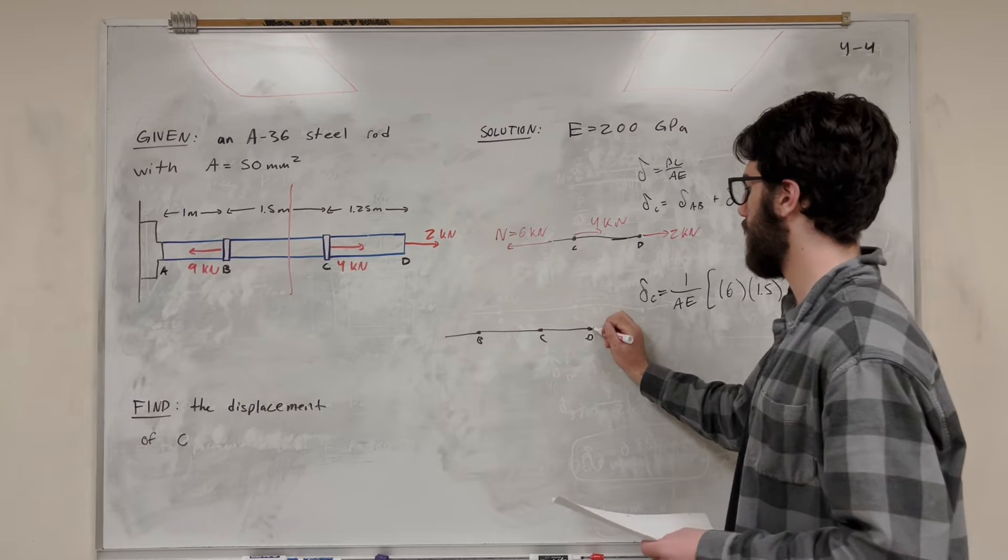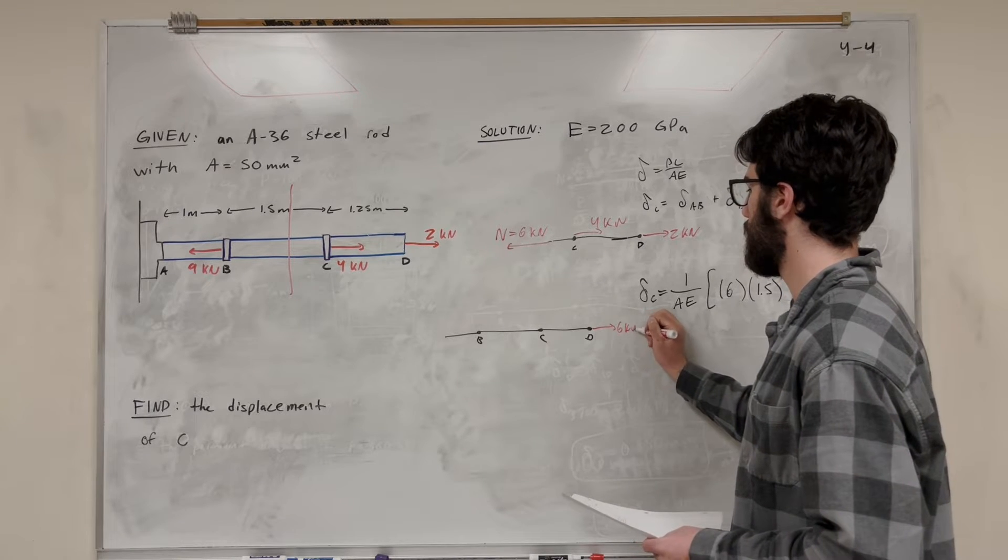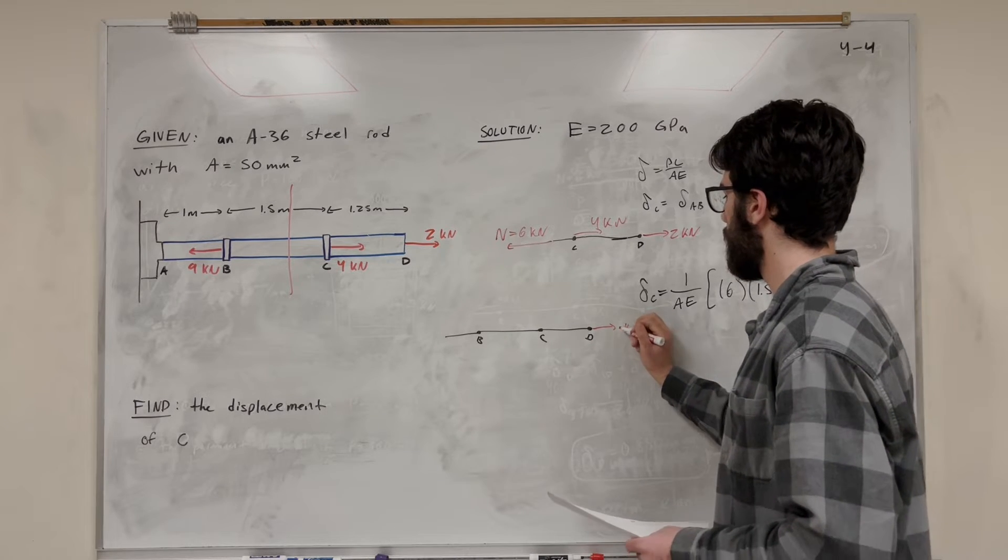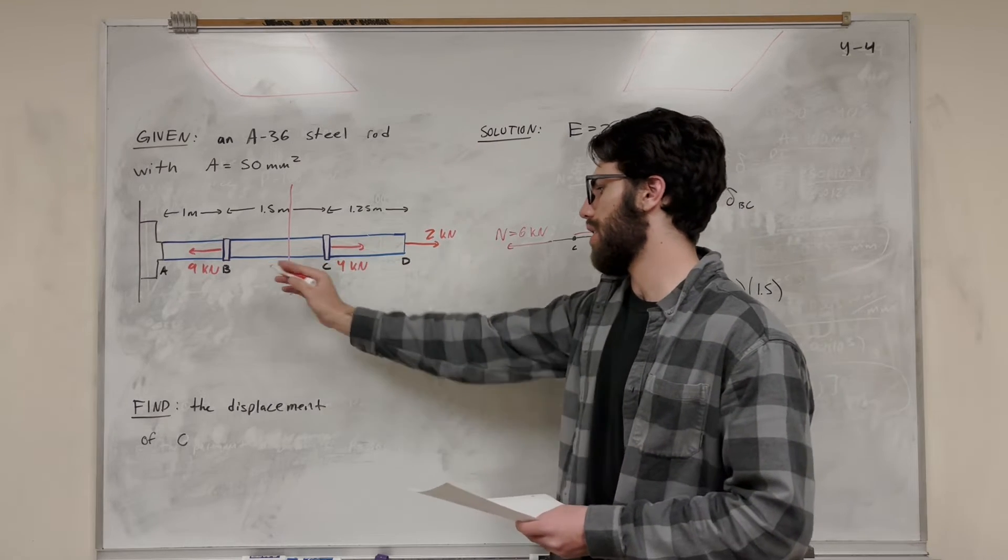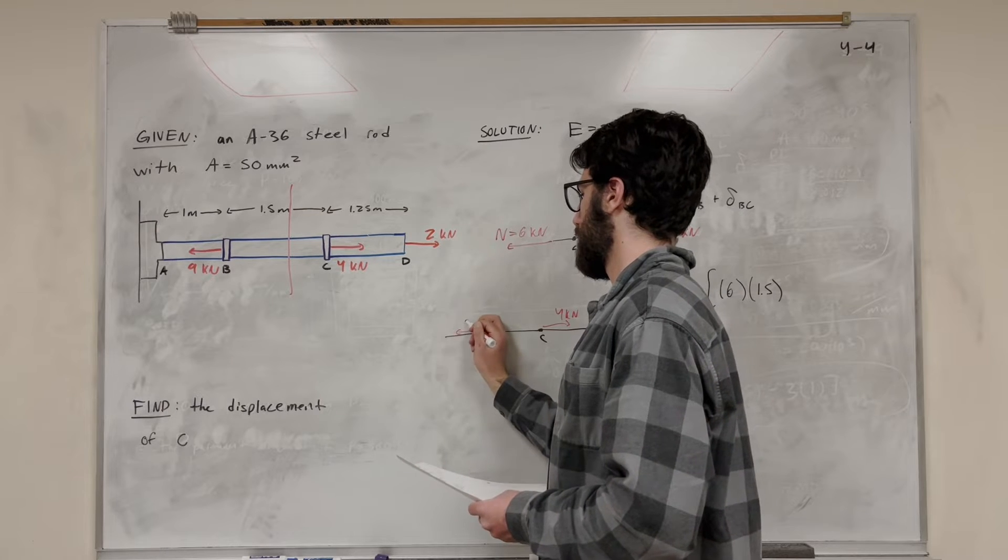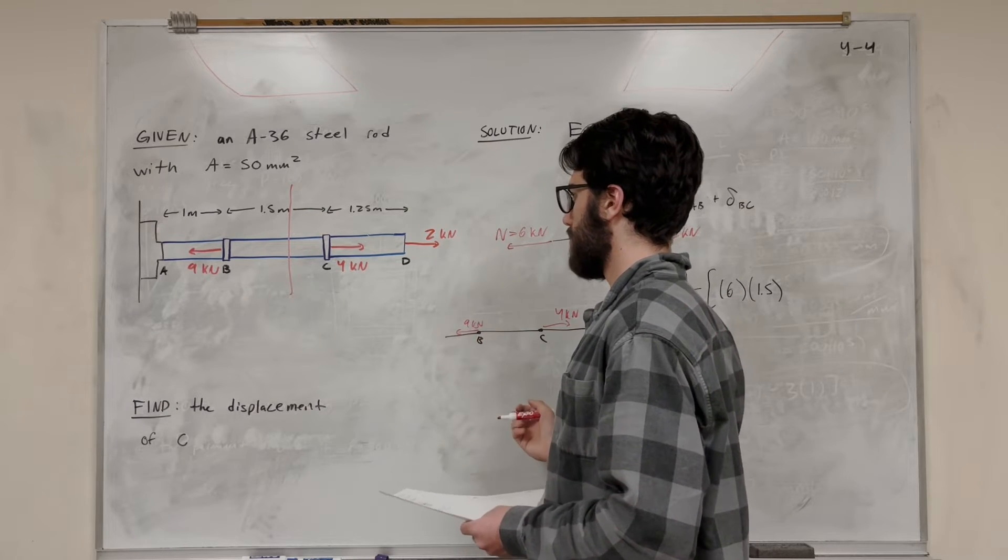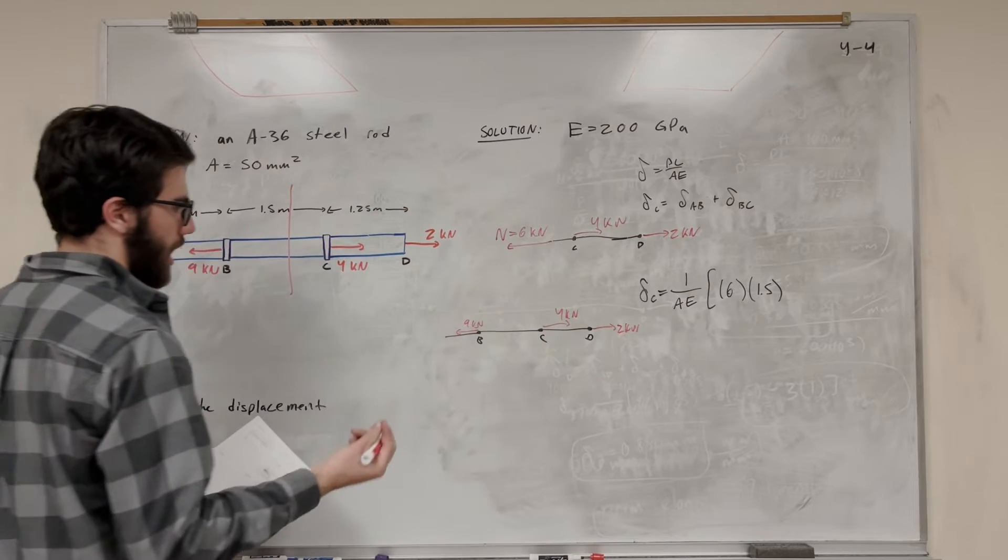So let's draw in the forces we found out again. We have this 2 kilonewtons force. We have this 4 kilonewtons force. And then we have this 9 kilonewtons force at B pushing this way.